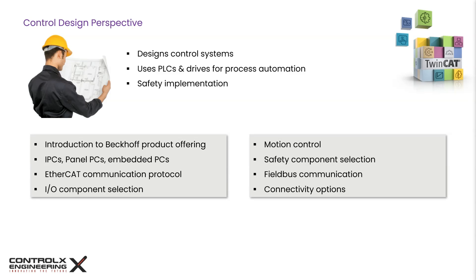Industrial automation hinges on precise and efficient movement, and that's where motion control steps in. It's like the conductor in an orchestra, ensuring each component — from robotic arms to conveyor belts — moves with flawless timing and accuracy. Selecting the right motion component is highly crucial. Bekoff has a wide offering of servo drives, distributed drive systems, rotary, linear, and translatory servo motors, gear boxes, as well as innovative products from linear product transport systems to planar motion systems.